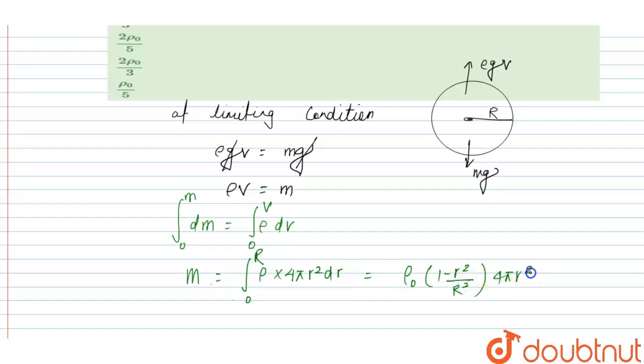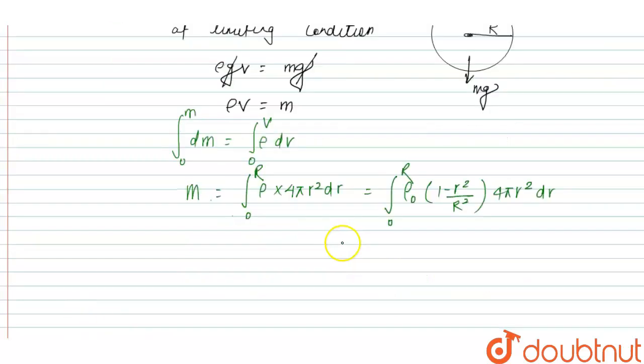This equals the integral from 0 to R of ρ₀(1 - r⁴/R⁵) times 4πr² dr. The integration of r² minus r⁴/R⁵: we can write ρ₀ into 4π as constant.